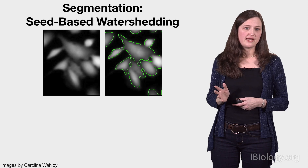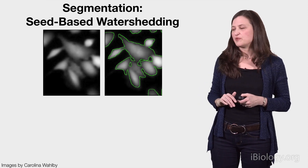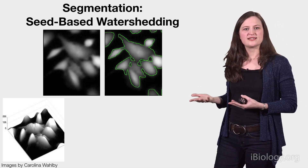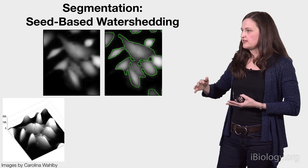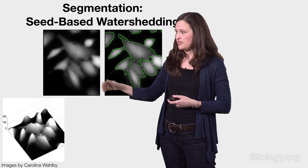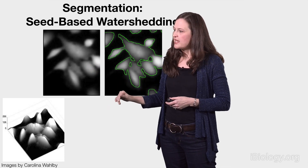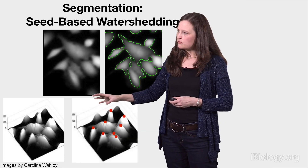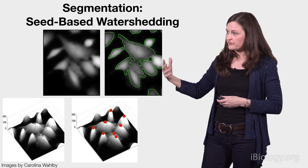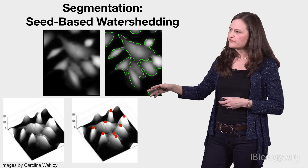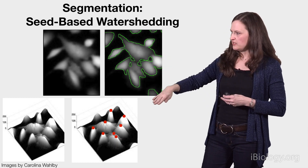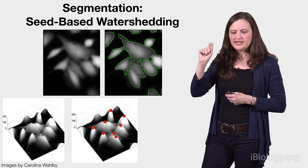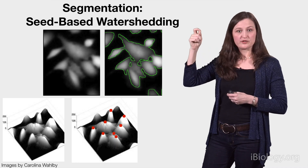I'm going to show you one simple example algorithm where we apply a mathematical routine to all the pixels in the image. To understand this algorithm, called seed-based watersheding, it's helpful to think of the image as a landscape with mountains where the cells are located. You can see that kind of depiction here — it's the same data as in the original image, just looked at in a different way. If you think about what distinguishes cells that are stuck together, you think of them as mountain peaks. We first want to find seeds using this algorithm by looking for the peaks in the landscape image. For every pixel in the image, you ask: am I the highest pixel in my local neighborhood? If so, you've found a mountaintop.